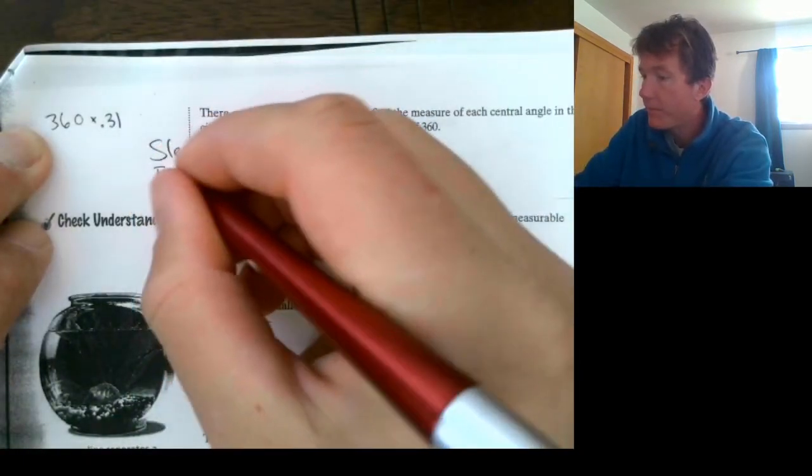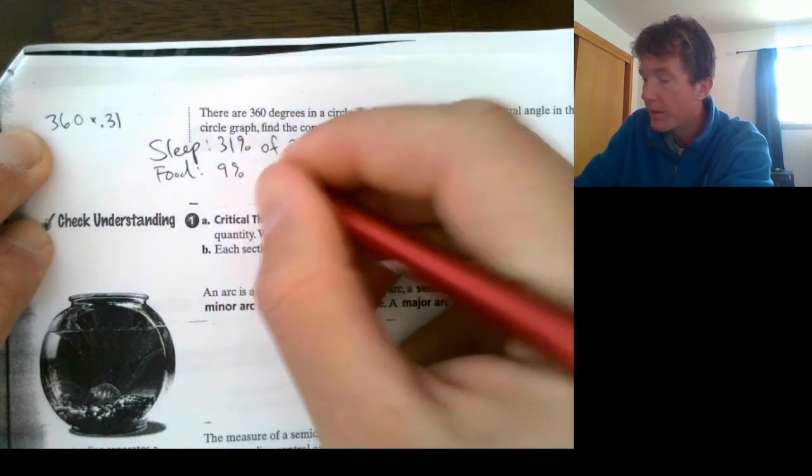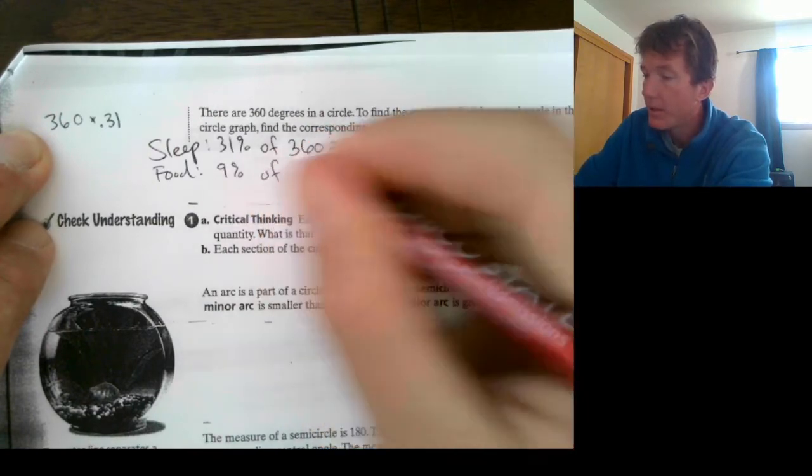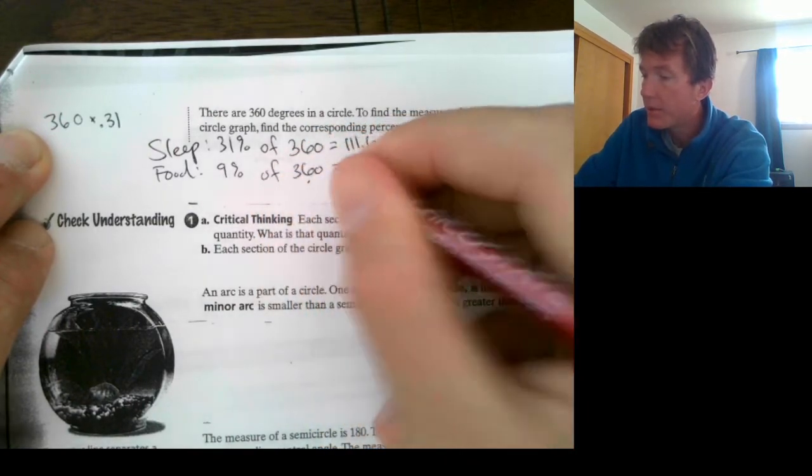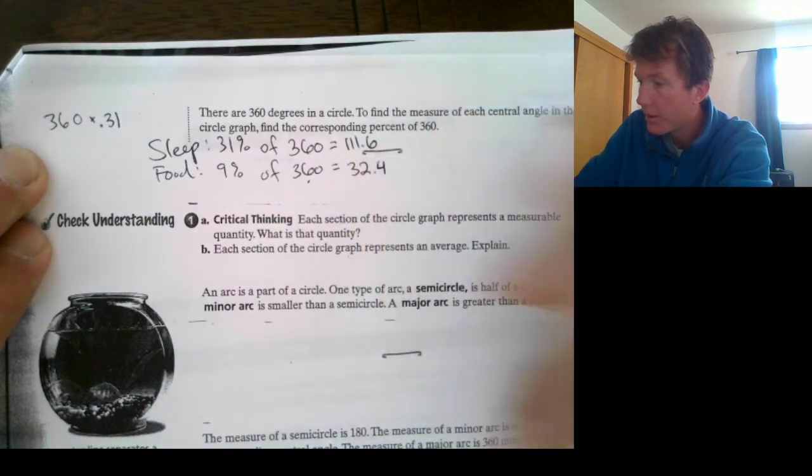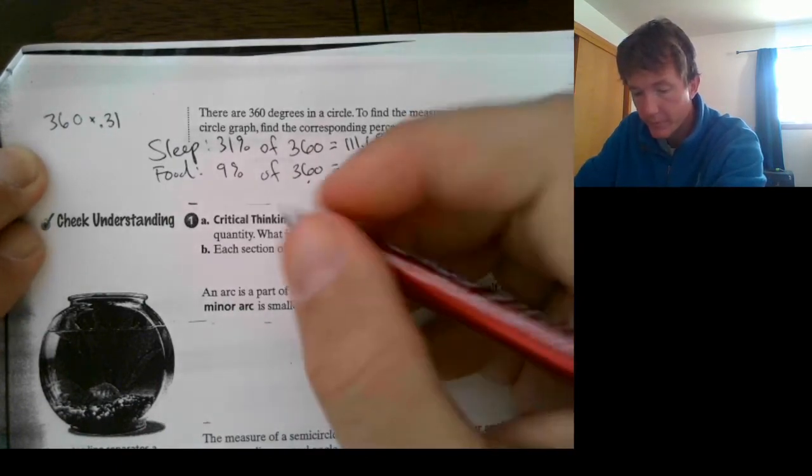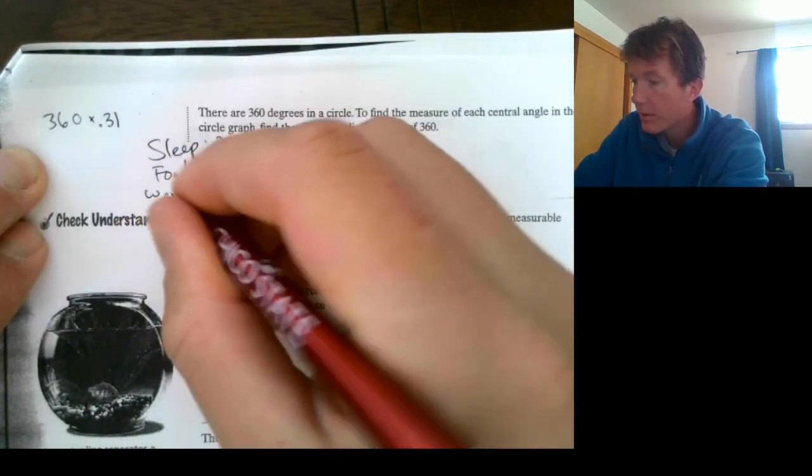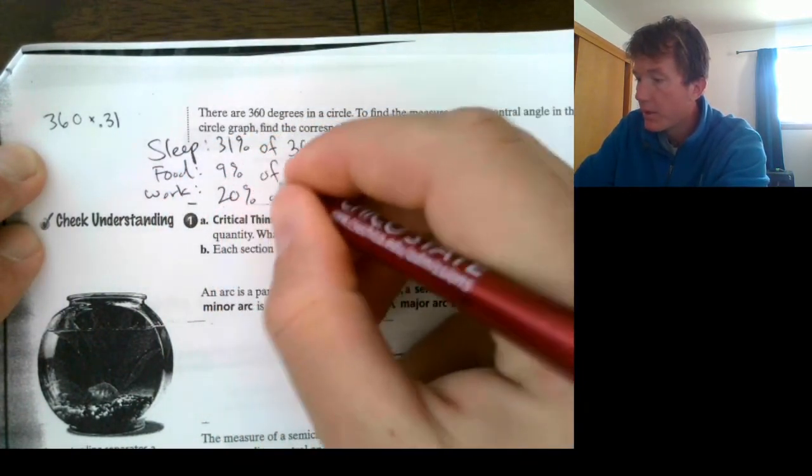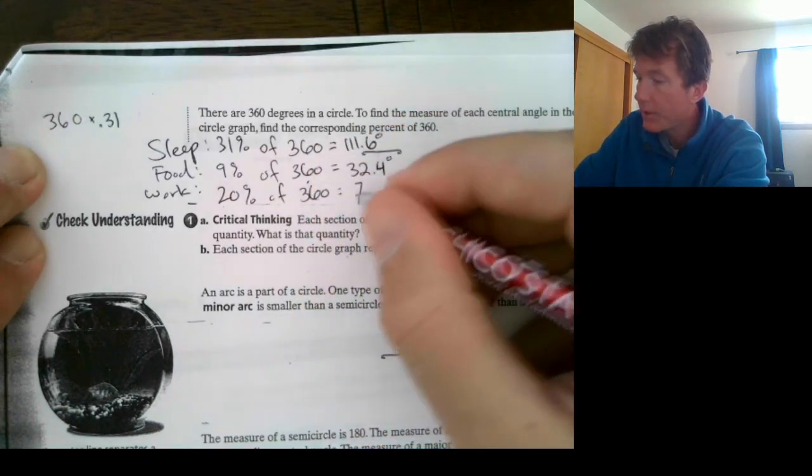Let's look at food. So, food was 9%. So, if you want to try this, pause the video right now and punch this in the calculator. 9% of 360. Food is going to be 32.4 degrees of the circle. Work. Work was 20%. So, 20% of 360 is 72 degrees.